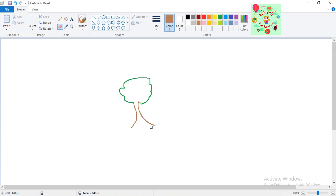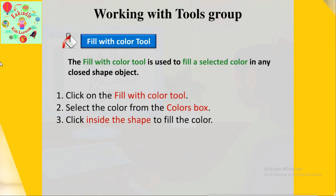Our next tool is the fill with color tool, denoted by a bucket filled with color. The fill with color tool is used to fill a selected color into any closed shape or object. The bucket is already filled with red color. To use it: first click on the fill with color tool, then select the color from the colors box, and click inside the shape to fill the color.